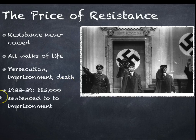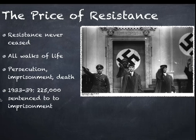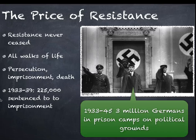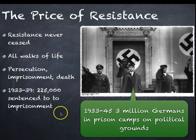From 1933 to 1939, 225,000 people were sentenced to imprisonment. It wouldn't necessarily be automatic death for minor offences or criticisms of the Nazi Party — that would simply be impractical — but it did mean a lot of people were imprisoned. Over the entire period of the Nazi regime, three million Germans were imprisoned in camps on political grounds.